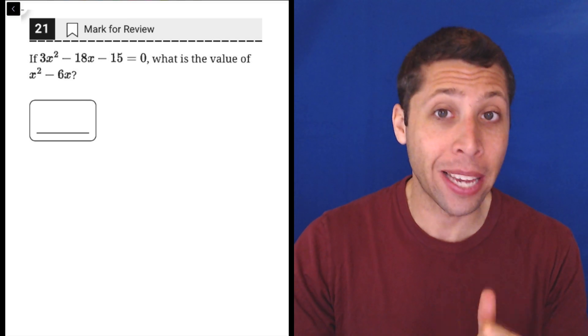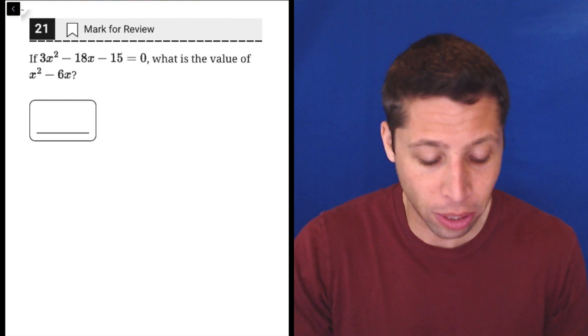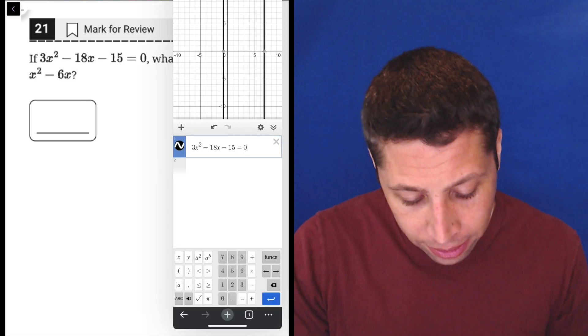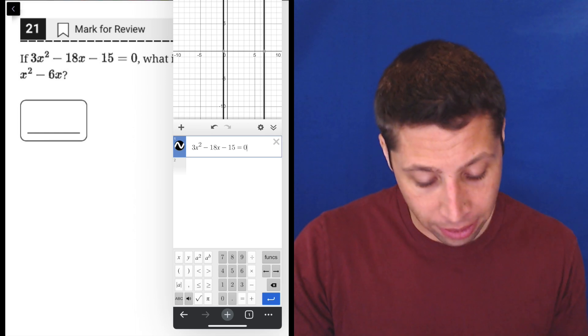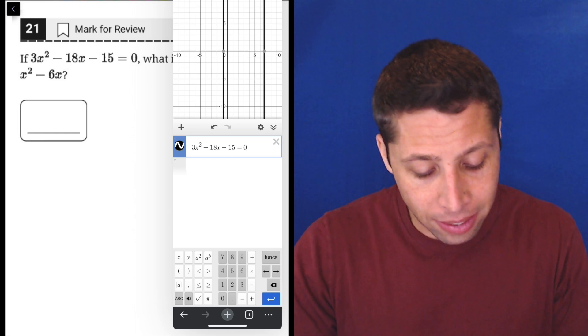I think for most people taking this PSAT in eighth or ninth grade you probably just don't know this algebra quite comfortably yet, so let's just use the calculator instead. Getting used to a calculator is a valuable skill as well. What I did here is I just plugged in that top equation: 3x² - 18x - 15 = 0. Just make sure you enter it correctly.